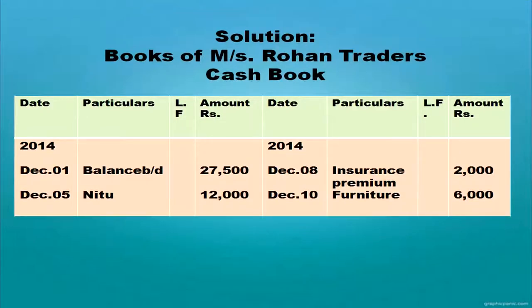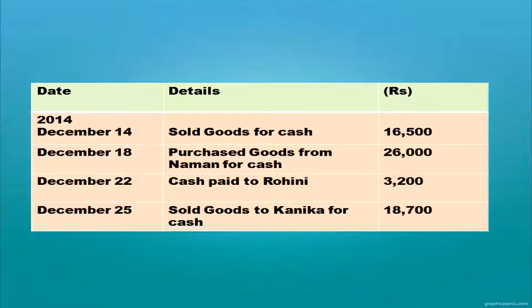Insurance premium is a payment and goes on the credit side. Furniture purchase is also a payment — when furniture is purchased, cash is paid, so furniture debit to cash, and you write 'By Furniture' on the credit side of the cash book with date and amount. For more transactions: sold goods for cash — cash account debit to sales. Purchased goods from Naman for cash — purchases debit to cash. Cash paid to Rohini — Rohini debit to cash. Sold goods to Kanika for cash — cash account debit to sales.